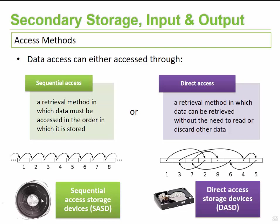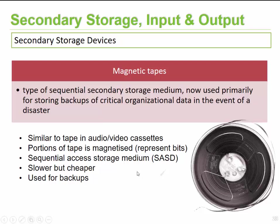On the other side we have direct access. With this retrieval method, data can be retrieved without the need to read all the information before it. Information is saved on the hard disk wherever space is available, in a random order. So if you want to find record number eight, it can immediately jump to record number eight without worrying about the seven records before it. Devices that use this are known as direct access storage devices, typically your modern hard disks.